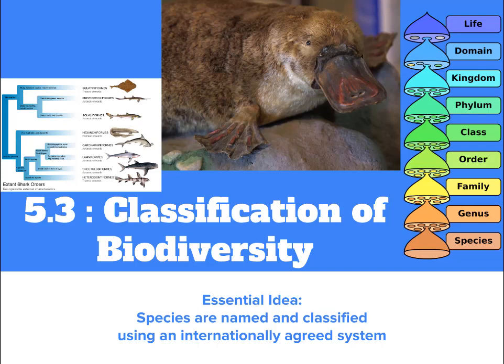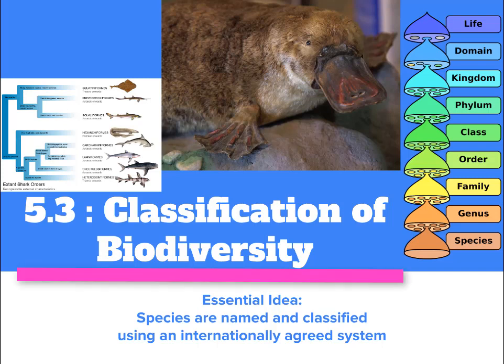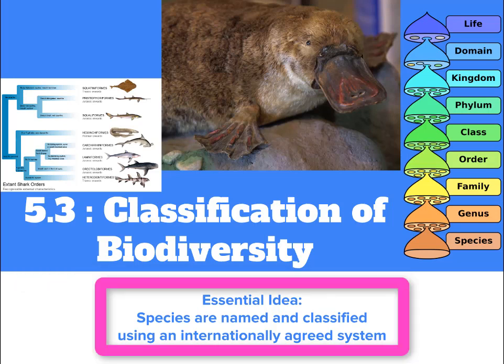In a very punny way, you could say that the science of classification, called taxonomy, is evolving. That is what 5.3, and later on 5.4, are all about: classification and organization of living organisms. 5.3 specifically is the classification of biodiversity, and the essential idea here is that species are named and classified using an internationally agreed system.